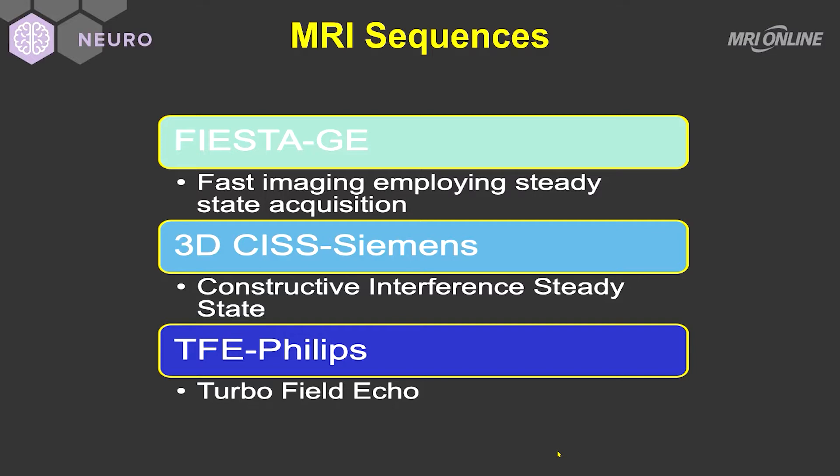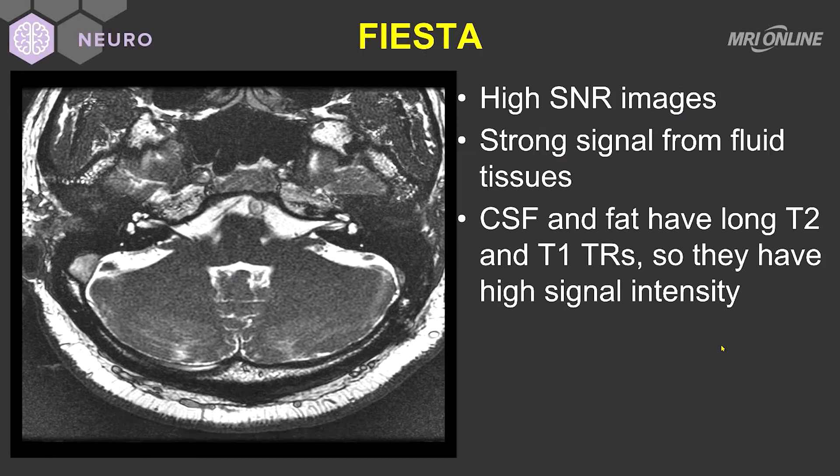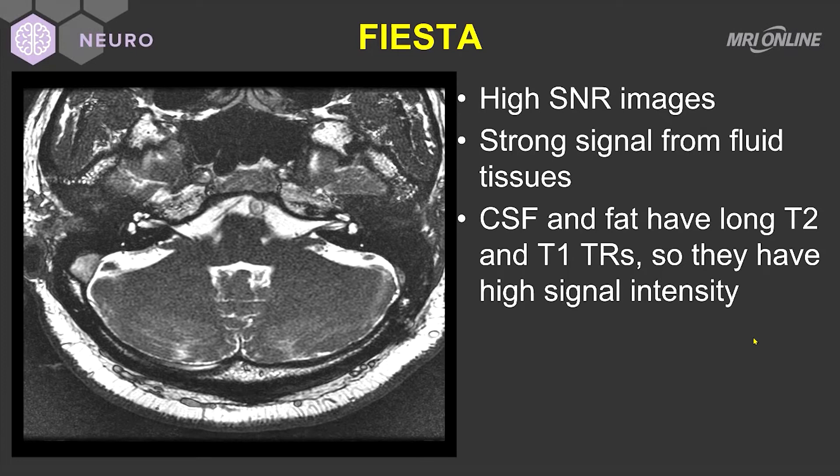This is an example of a Fiesta GE pulse sequence. As you can see, the CSF is bright. If we look at the cochlea and vestibule, we are also seeing bright signal dominating. What's nice about this is that we can therefore see the cranial nerves very nicely outlined by the cerebrospinal fluid.